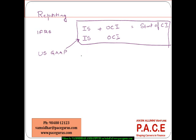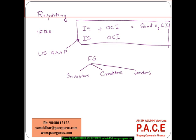Why does someone use this income statement, and who can use it? The financial statements prepared by a company are majorly used by various stakeholders — primarily investors, creditors, or lenders. There could be many other parties who could be using them. Investors are more interested in the valuation of the particular firm.